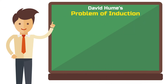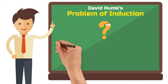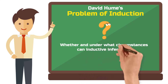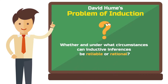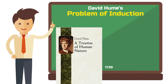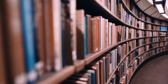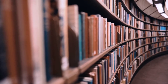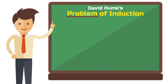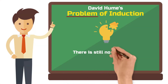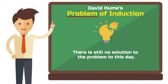David Hume's problem of induction is a fundamental question in epistemology that deals with whether and under what conditions inductive inferences can be considered reliable or rational. The Scottish philosopher first raised this question in the 18th century in his work A Treatise of Human Nature. Although Hume initially discussed the problem only in the context of empirical science, it remains relevant to all sciences that recognize induction as a valid proof method. It continues to be called the problem of induction because it has yet to be solved — for over two centuries philosophers of science, including the famous Karl Popper, have been grappling with it.